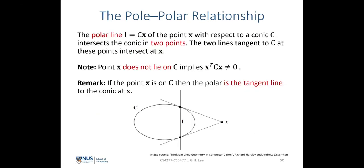I will give more detail about the pole-polar relation. From lecture 1, the equation l = C·x is the relation of a tangent line and the point lying on the tangent of the conic. If x^T·C·x = 0, the point x lies on the conic. But in the case where x^T·C·x ≠ 0, we have a point x not lying on the conic, and l = C·x still holds — we call this line the polar line instead of the tangent line.